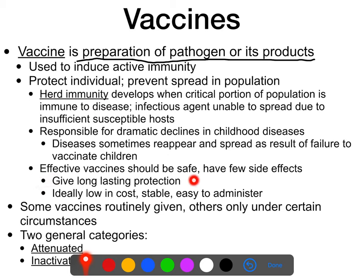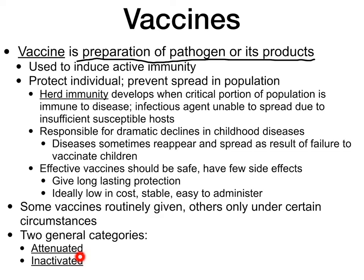Ideally, effective vaccines should be safe, have few side effects, give long-lasting protection, be low in cost, stable, and easy to administer. In practice, very few vaccines fit all of these criteria — there is no perfect vaccine, but there are some pretty good ones and some less good ones. In general, vaccines fall into two main categories: live attenuated and inactivated.